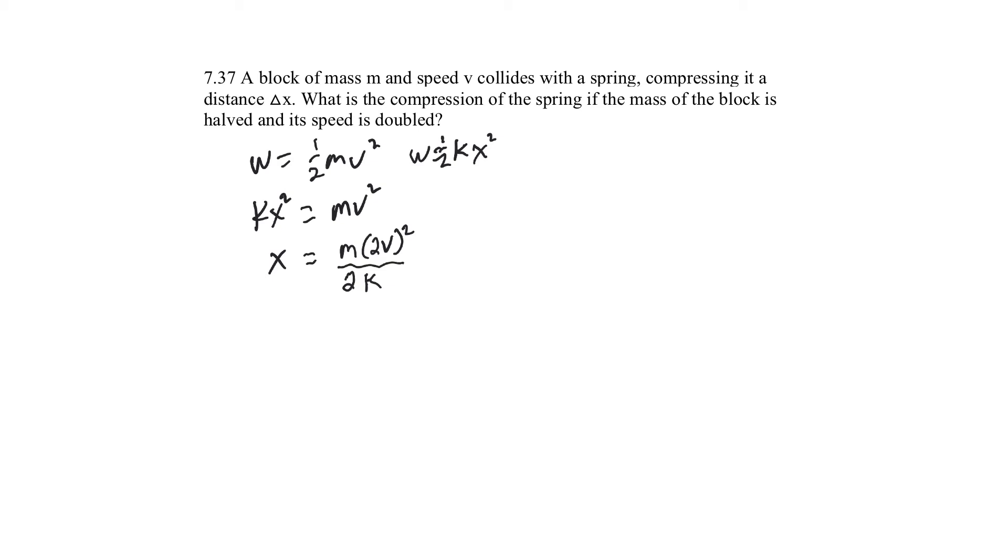Since this was x squared, all of this has to be in the square root. So, what'll happen is inside, it'll be 4v squared over 2k, and this is equal to 2m times v squared over k.